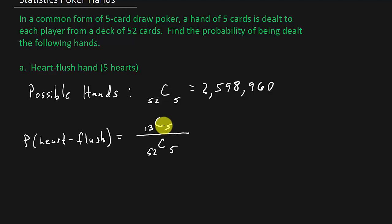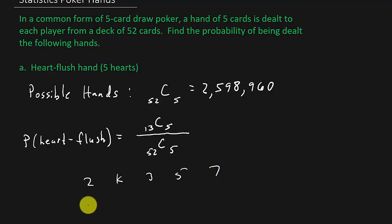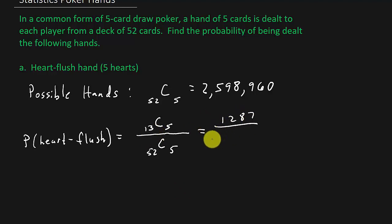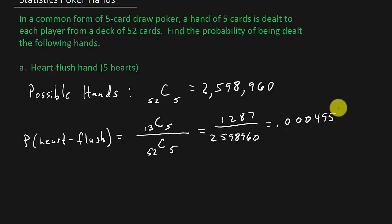It's a combination because the order we get the cards in doesn't matter. Say you get five hearts: a 2, a king, a 3, a 5, and a 7. Or instead of that order, you get a 7, a king, a 2, a 5, and a 3 — it's the same thing. The order doesn't matter, so it's a combination. Combination 13 choose 5 gives us 1,287 over 2,598,960, which equals 0.000495. That is your probability of getting a heart flush.